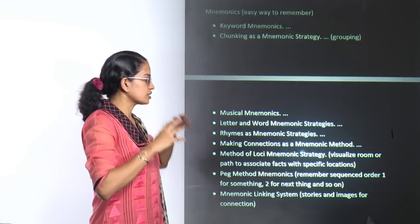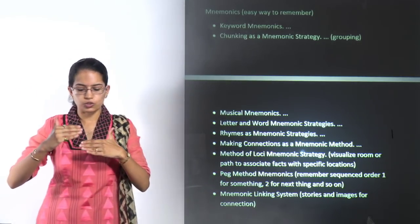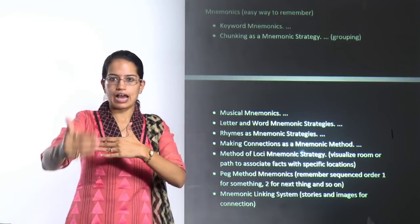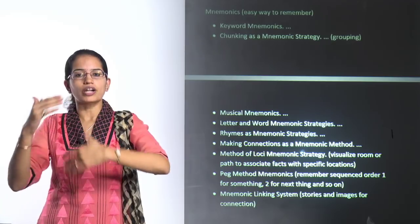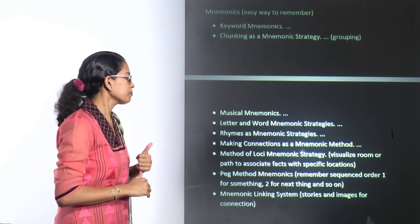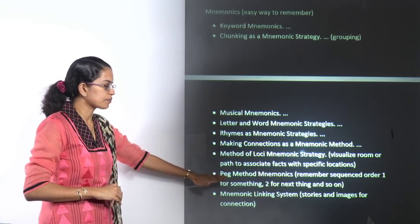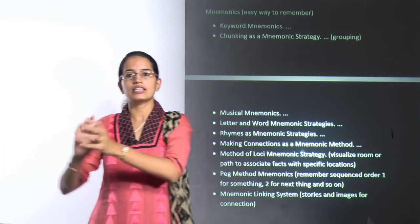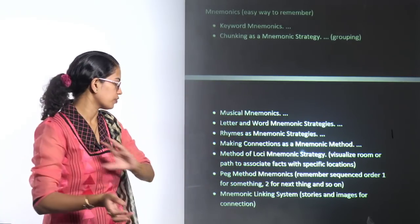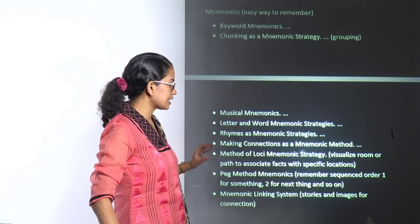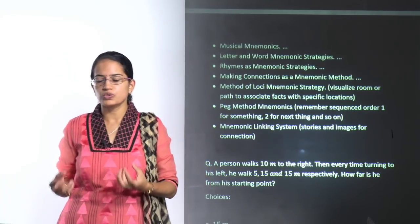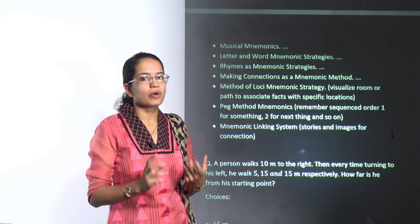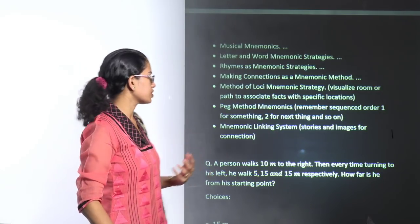The peg method is about sequential remembering — you remember one thing, then the second, then the third, in an ordered fashion. For each item in the sequence you create a specific mnemonic. Finally, the mnemonic linking system uses small stories and images to remember things. Those are the various types of mnemonics.